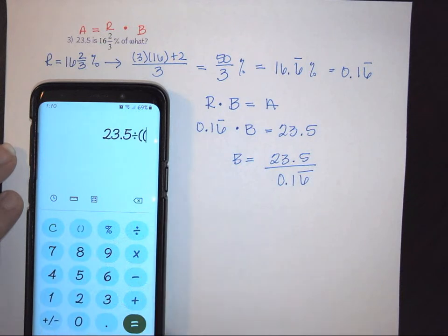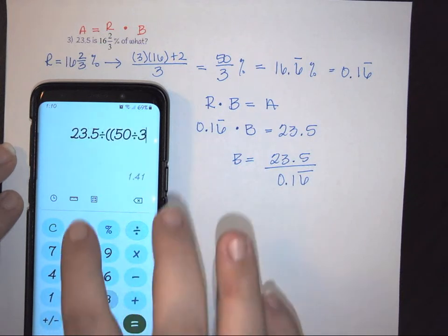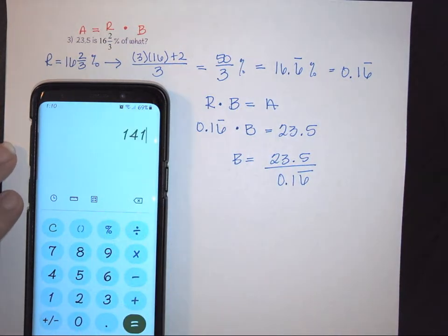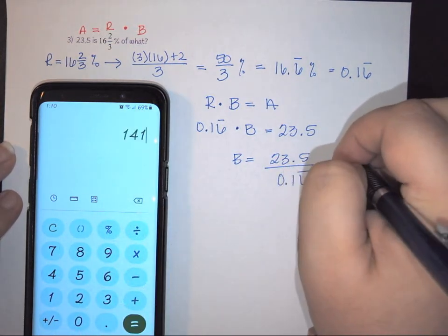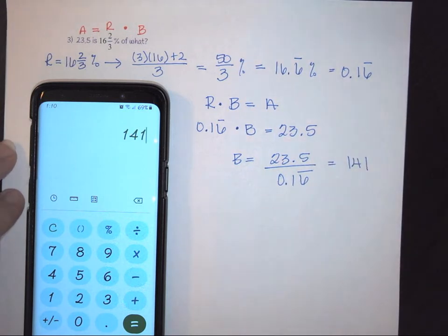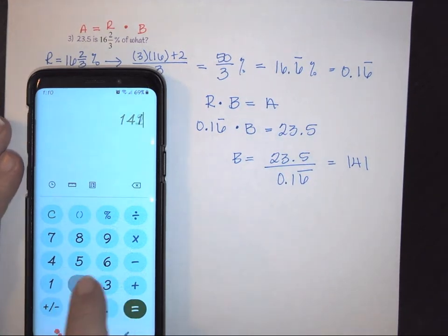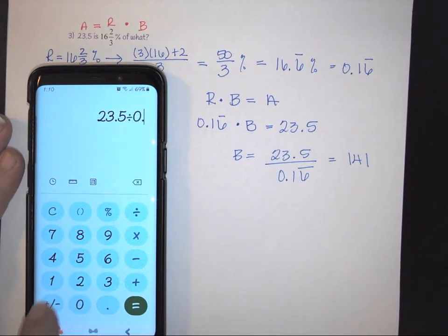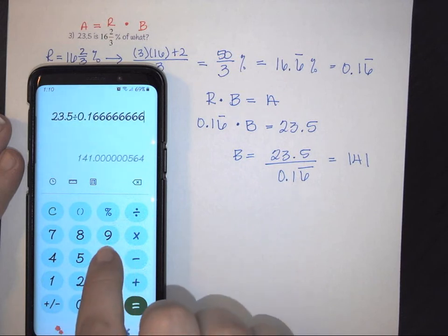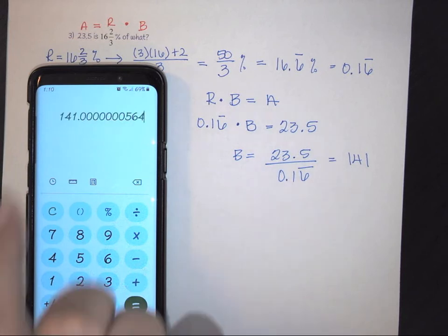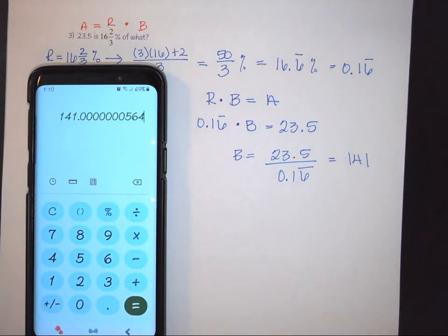So we would do a second parenthesis, 50 divided by 3, close it, divide it by 100, close it, and hit enter. So this is going to give us 141. Now if your calculator doesn't have the parenthesis piece, then what you're going to want to do is you're going to want to do 23.5 divided by, and then you're going to go 0.1 and do as many until you can't do them anymore, and hit enter. And notice your number is basically 141.